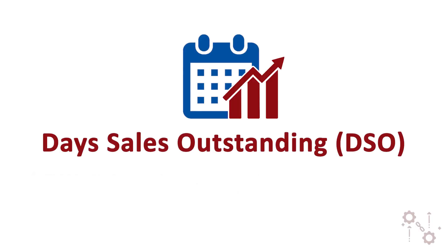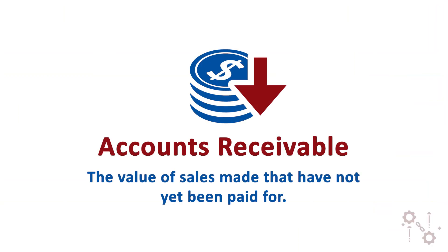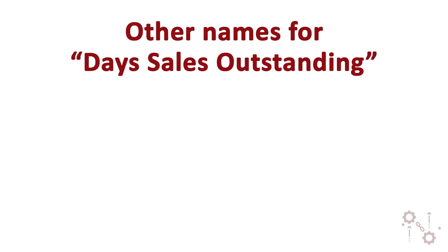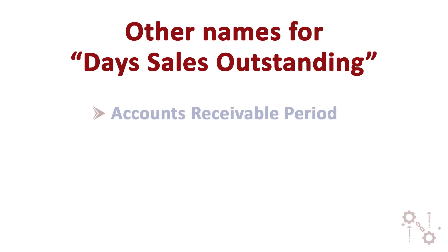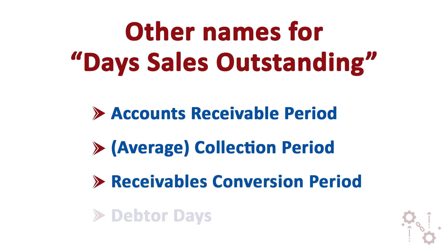Days Sales Outstanding, DSO, is a measure of the average time a business is waiting to receive cash from the sales that have been made, including some of which have not yet been paid for — credit sales. The value of sales made but not yet paid for is called accounts receivable. Accounts receivable can only exist when you, as the seller, choose to offer credit sales, allowing customers to buy now and pay later. Days Sales Outstanding also has other names: the accounts receivable period, collection period, average collection period, receivables conversion period, or debtor days.